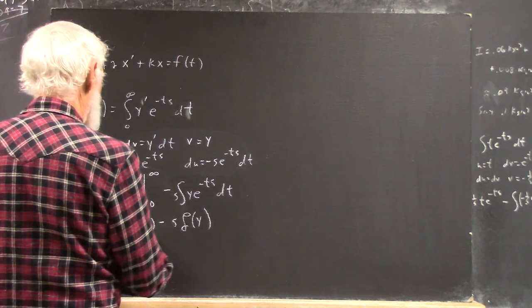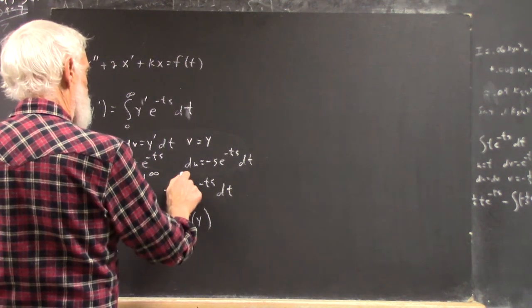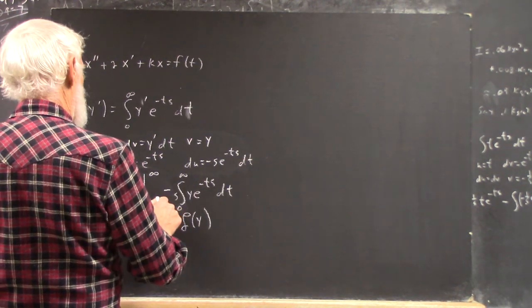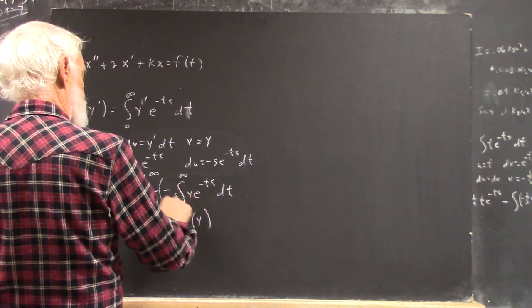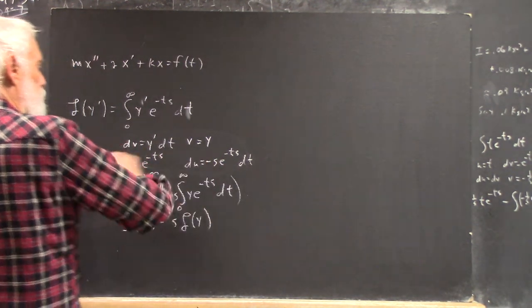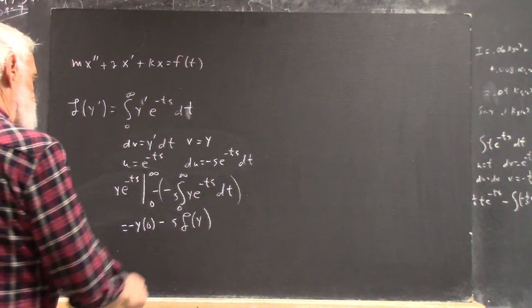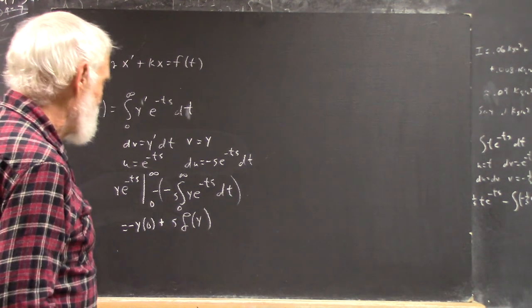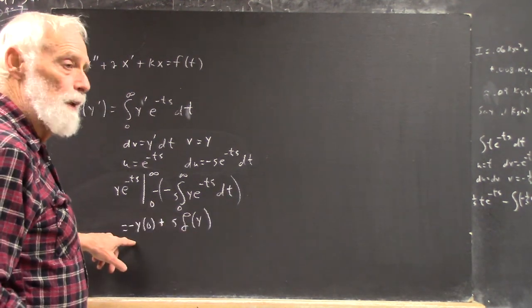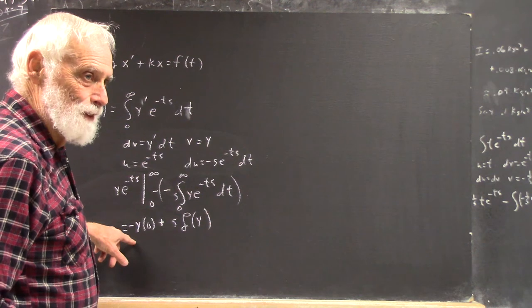Except what? This is negative. This is the integral from zero to infinity. This is minus this, and there's a minus in there. Because you've got the minus here and the minus from the... so it's what I thought it was. It's s times the Laplace transform of y minus y of zero.